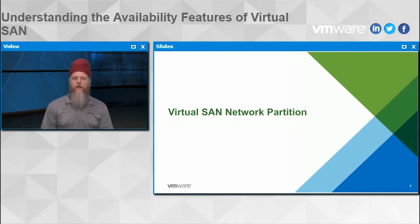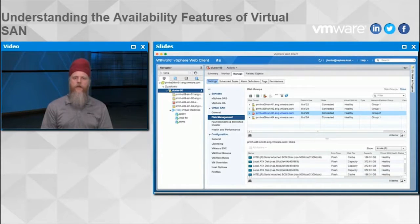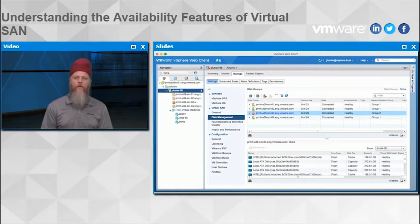Now let's talk about virtual SAN network partitioning — what happens if we have any kind of networking issue with virtual SAN. The host highlighted here is network partitioned; it's had some kind of network or switch failure resulting in it becoming isolated from the other hosts. You can see that highlighted host is now in network partition group two rather than group one like the rest of our hosts.